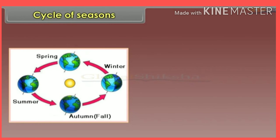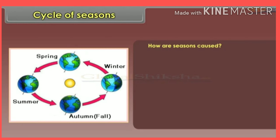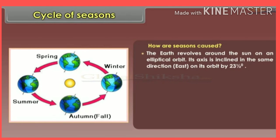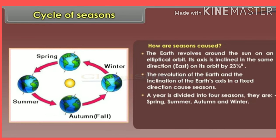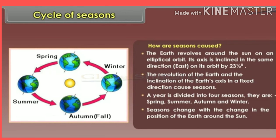Cycle of seasons — How are seasons caused? The earth revolves around the sun on an elliptical orbit. Its axis is inclined in the same direction on its orbit by 23 and a half degrees. The revolution of the earth and the inclination of the earth's axis in a fixed direction cause seasons. A year is divided into four seasons: spring, summer, autumn, and winter. Seasons change with the change in the position of the earth around the sun.